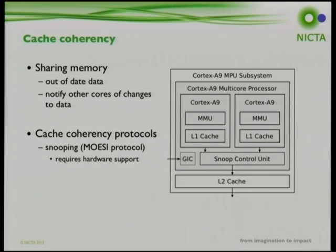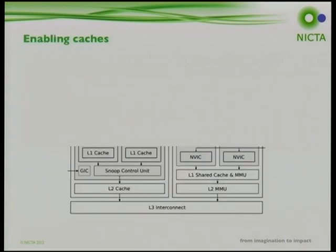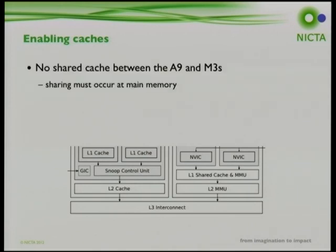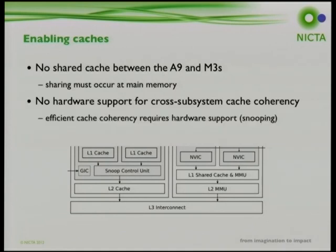Cache coherency is traditionally handled by snoop control, a piece of hardware on the bus monitoring memory accesses to keep caches coherent. In our system, the A9 subsystem has a snoop control unit keeping its local caches coherent, and the M3s have a shared cache. However, between the two subsystems there is no shared cache, no hardware support for cache coherency, so everything must be done in software.